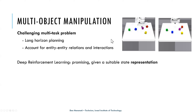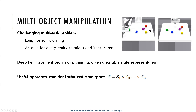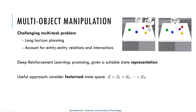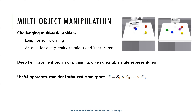Deep reinforcement learning is a promising approach to solve these problems given a suitable state representation. It is useful to consider a factorized state space where the entire state factorizes into the states of individual entities. In tabletop manipulation, entities are the objects and the agent. The order in which we describe cube locations doesn't matter — treating the state as a set helps deal with the combinatorial complexity of these tasks.